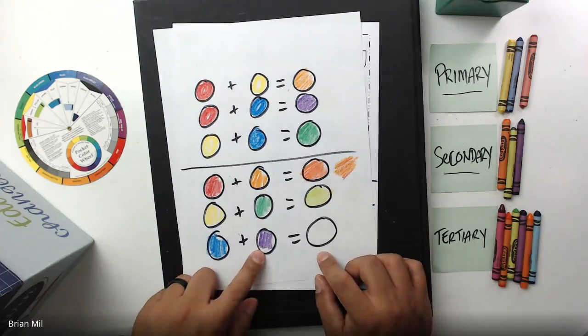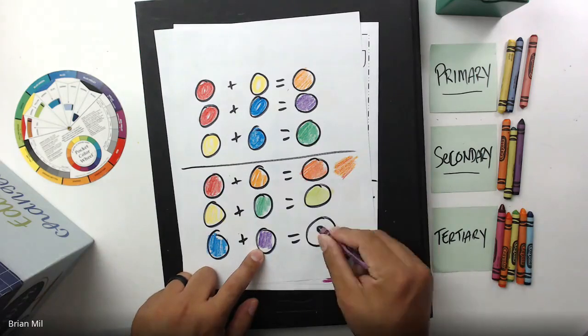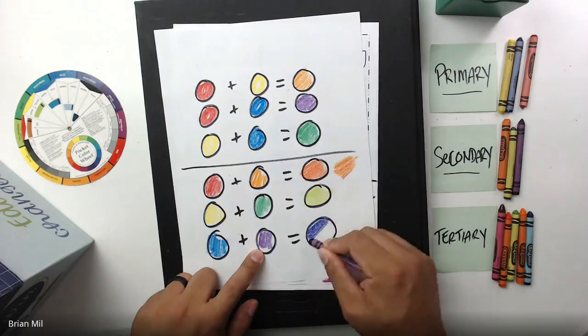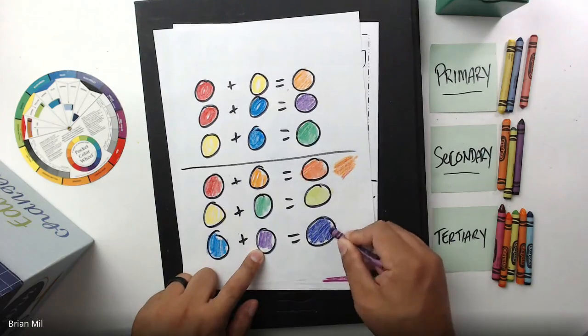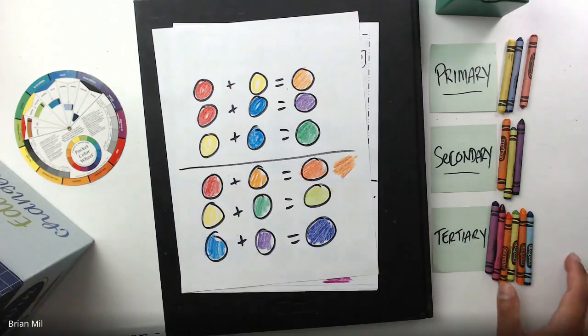Last but not least, we have blue plus purple and it's going to be a color called blue violet. It's kind of like a dark purple.